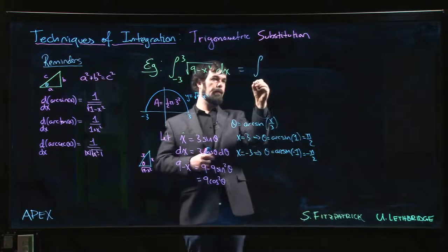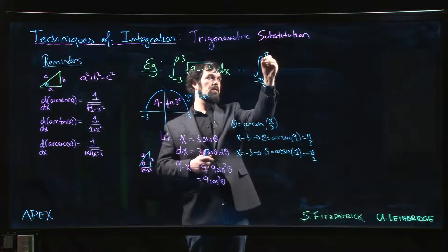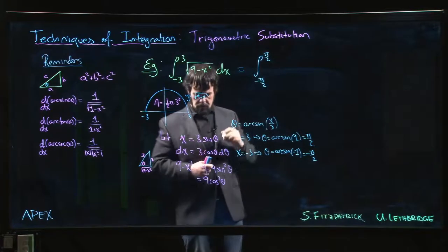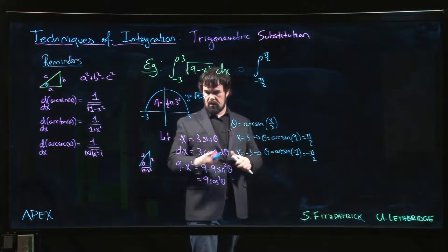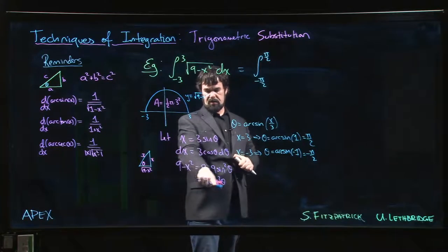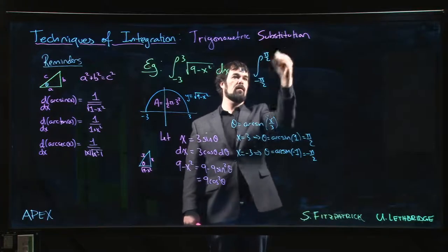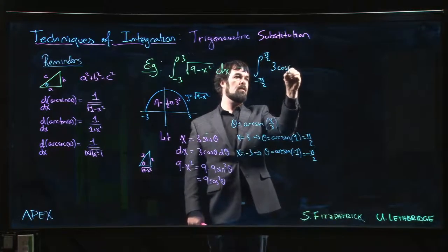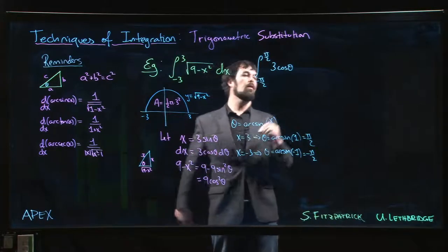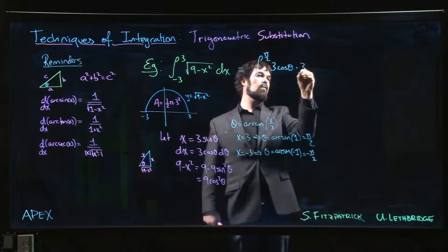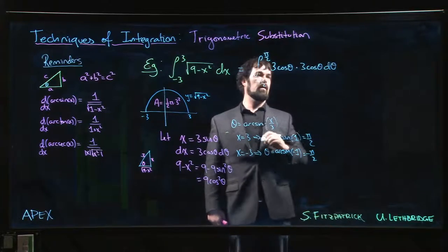So we can now put everything in. Minus 3 becomes minus pi over 2. 3 becomes pi over 2. Now, square root of 9 minus x squared becomes the square root of 9 cos squared theta, becomes 3 cos theta. And dx is also 3 cos theta.